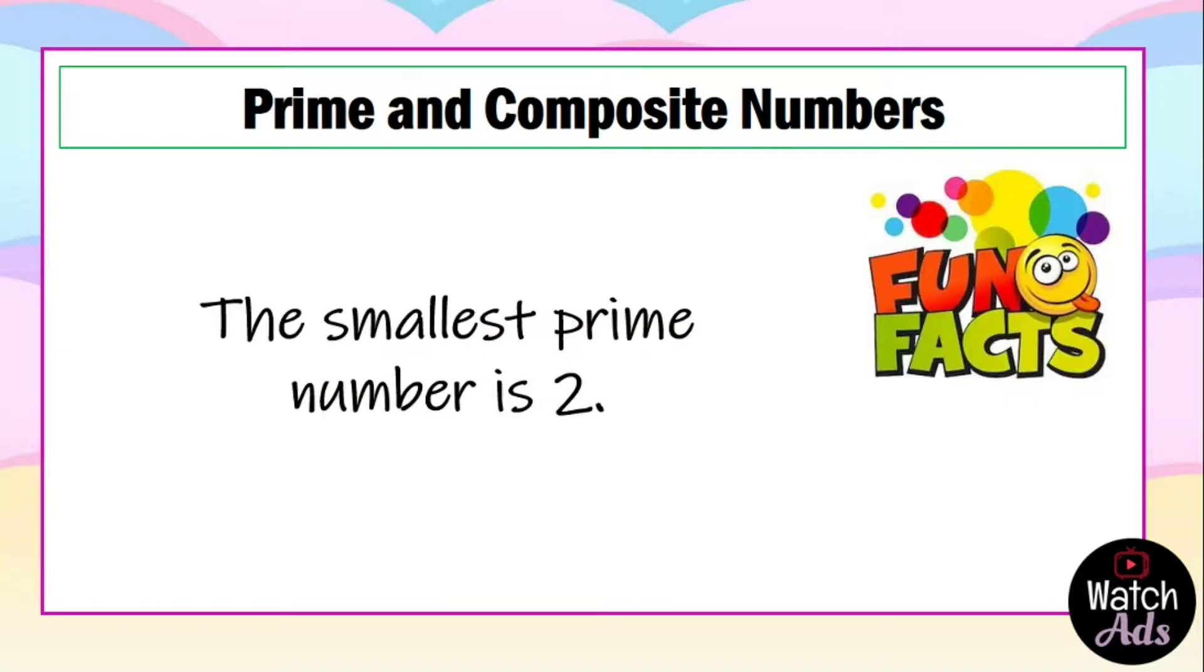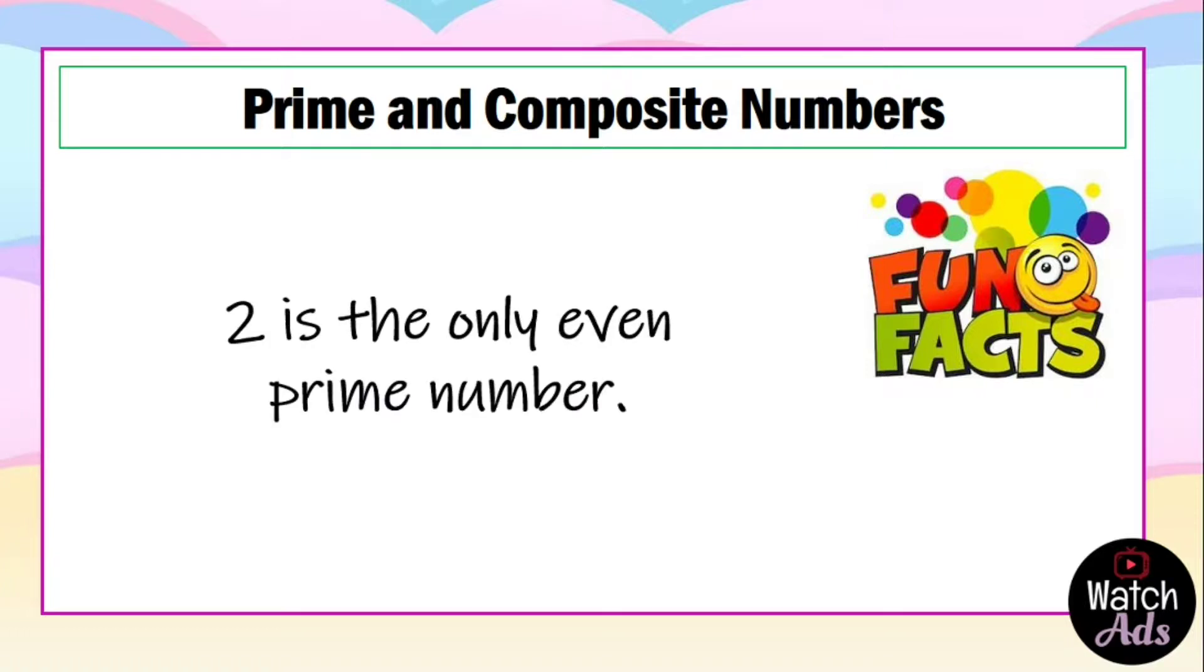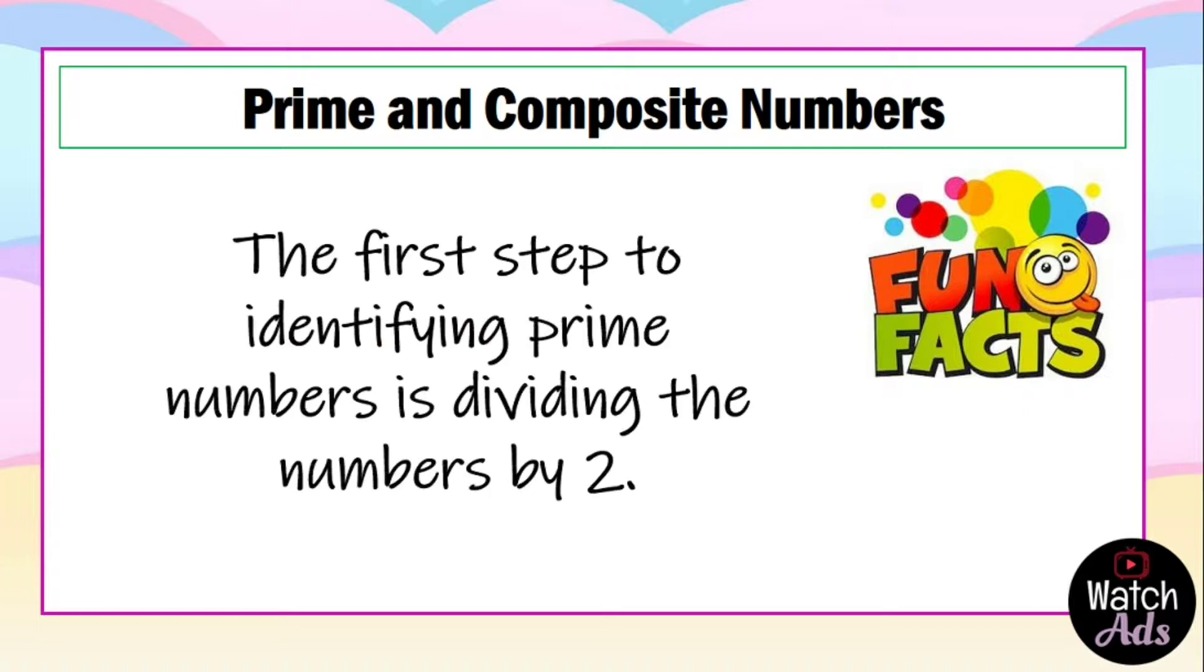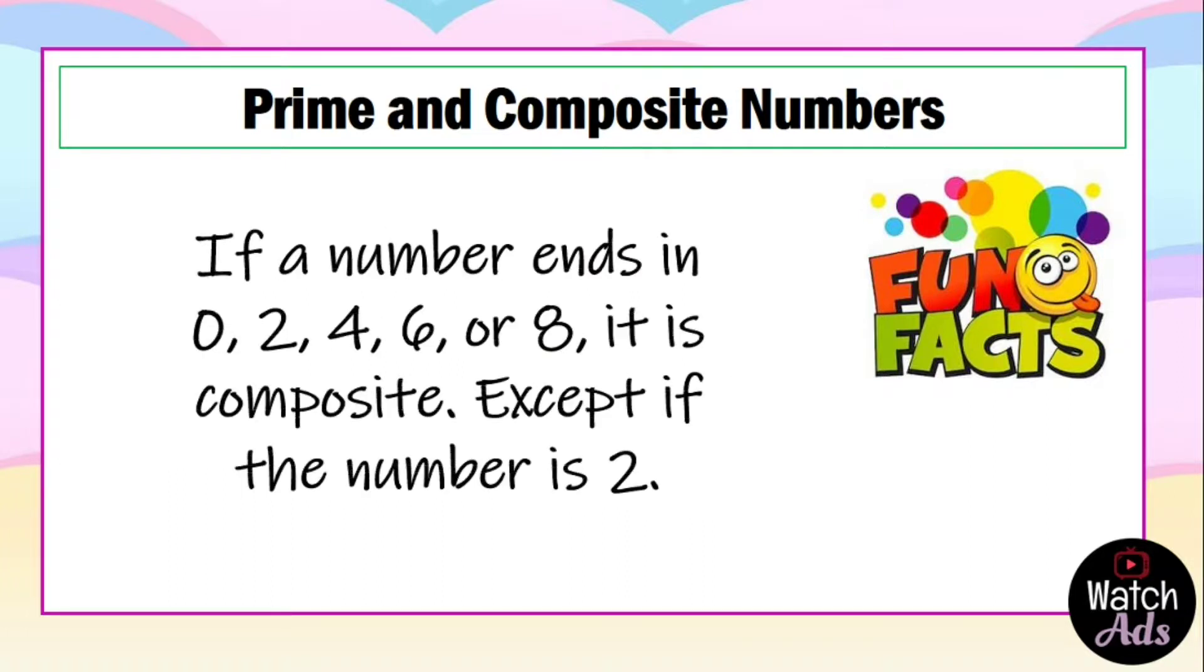The smallest prime number is 2. 2 is the only even prime number. The first step to identify prime numbers is dividing the numbers by 2. If a number ends in 0, 2, 4, 6, or 8, it is composite, except if the number is 2.